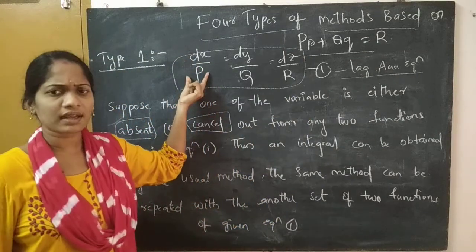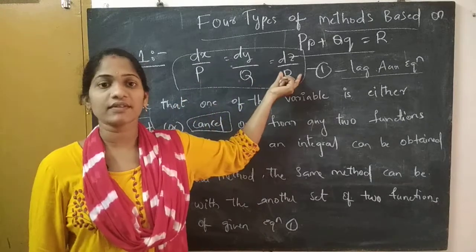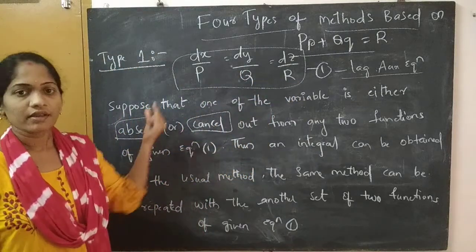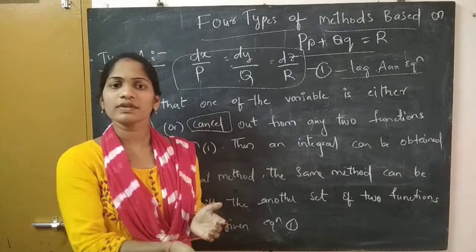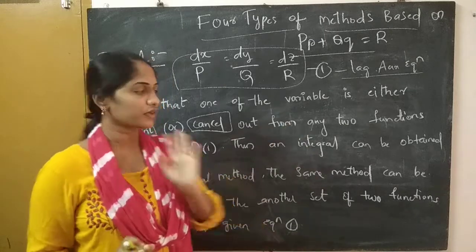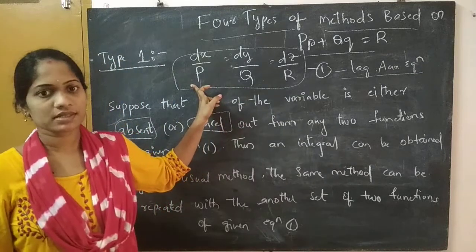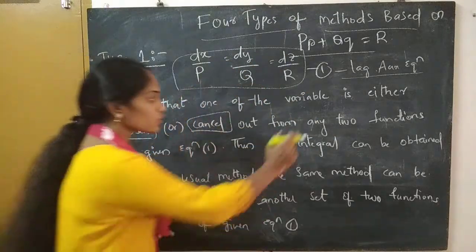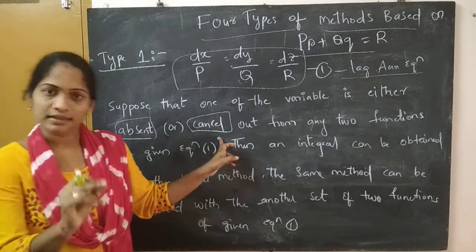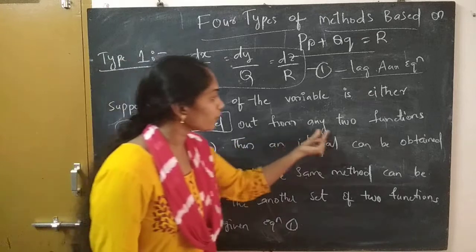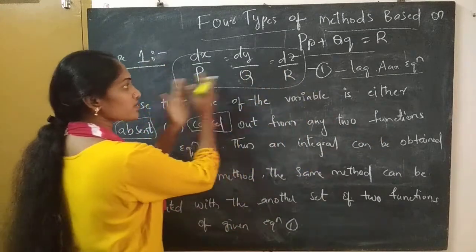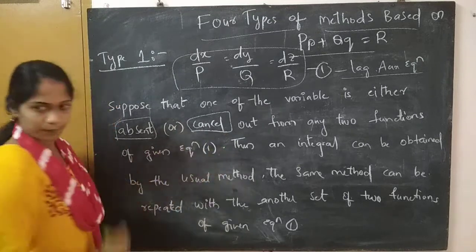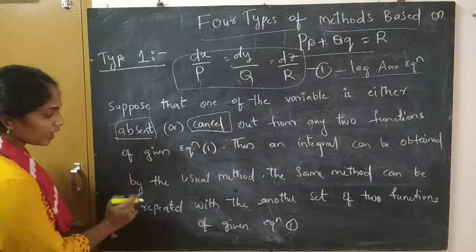So P, Q, R are functions of x, y, z. Now observing these variables: if a variable cancels out from any two fractions of the auxiliary equation, that is the key point. Out of any two fractions, if a variable is absent or gets cancelled, then an integral can be obtained by the usual method — that is, by doing integration.